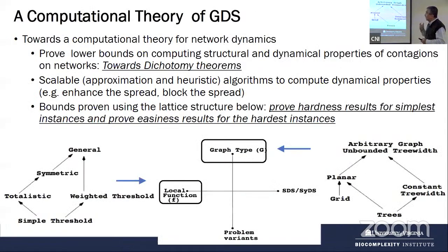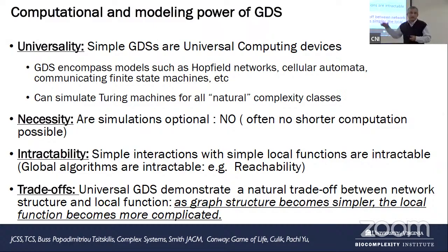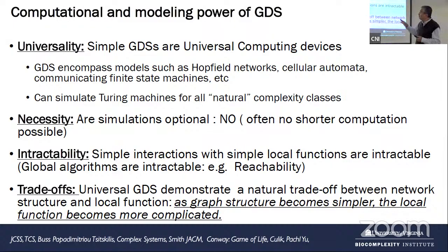In our work, we'll show that these simple objects can become universal machines — you can do this for any complexity class, but you have to make the function progressively harder. Zero-one Boolean systems can only reach up to NP in a certain sense, but by making the functions more complicated or the graph infinite, you can introduce undecidability. By adding complexity to the functions, you can actually get every level of the complexity hierarchy. Even though GDS models are simple, they are fairly powerful. It also shows that often you cannot reason about these systems without simulation — you can get hardness results.